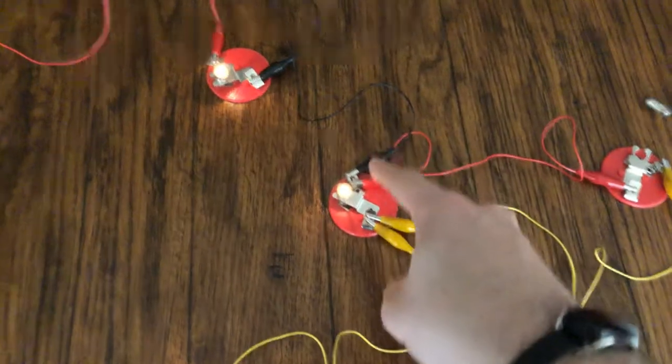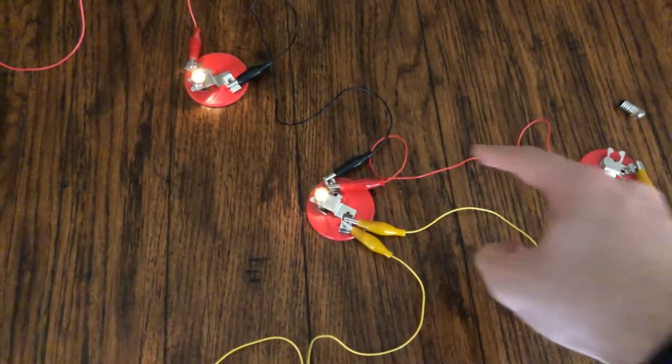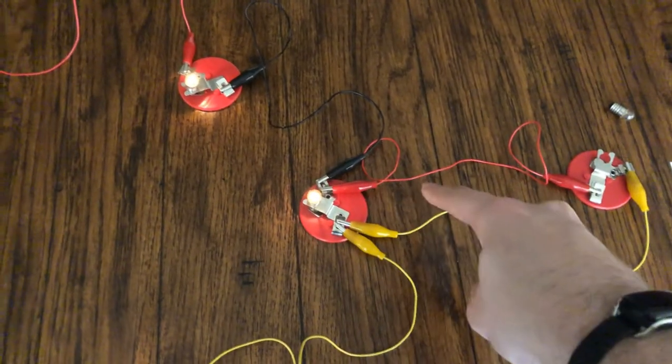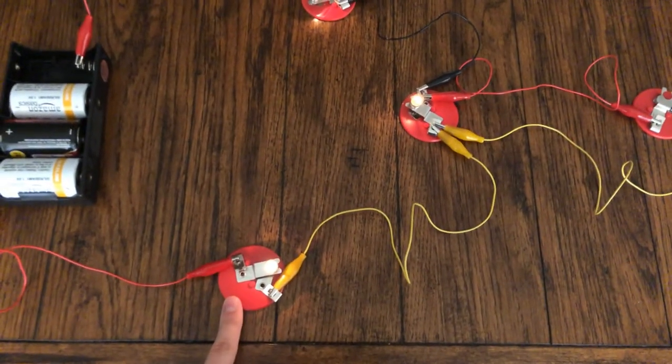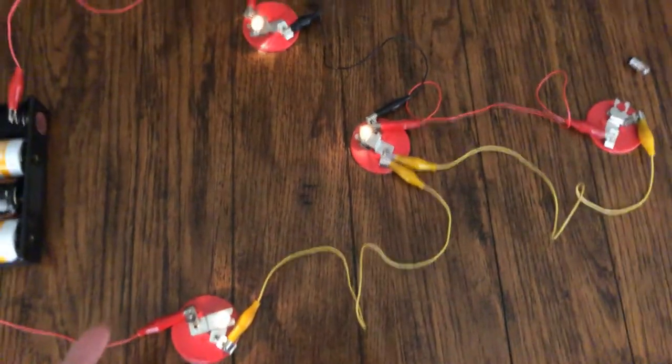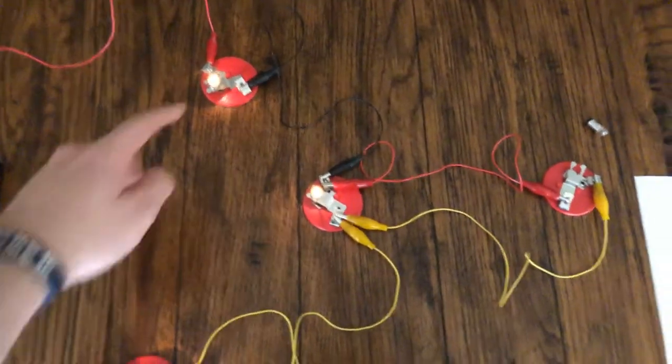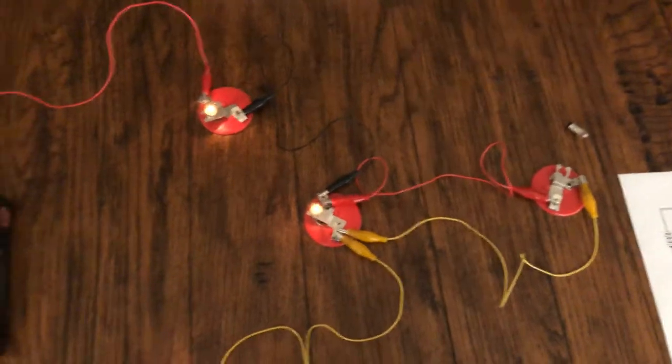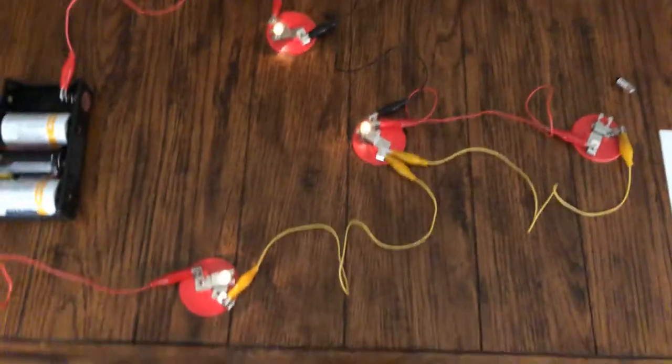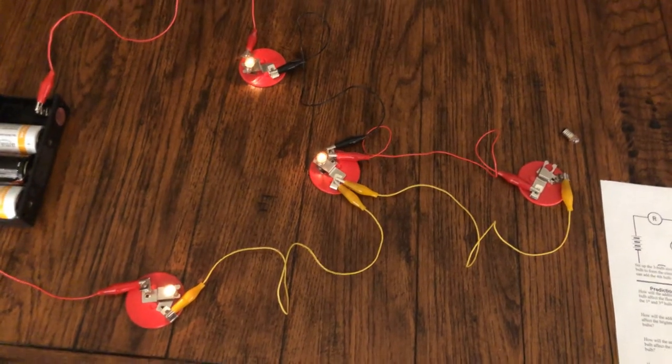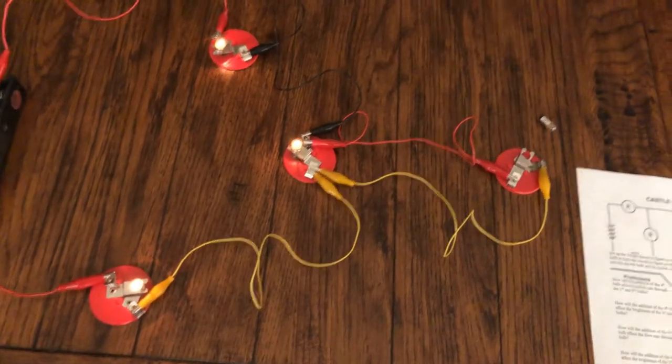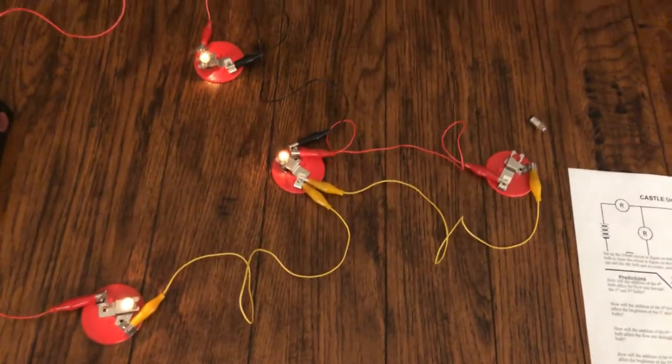If the charge has another path that it's going to flow through on the other side of bulb one or on the other side of bulb three, how is that going to affect the charge flow in these bulbs? Is it going to make that charge flow bigger or smaller? And then along with that, how does the brightness change? If we have more charge flow, we should see the bulbs get brighter.